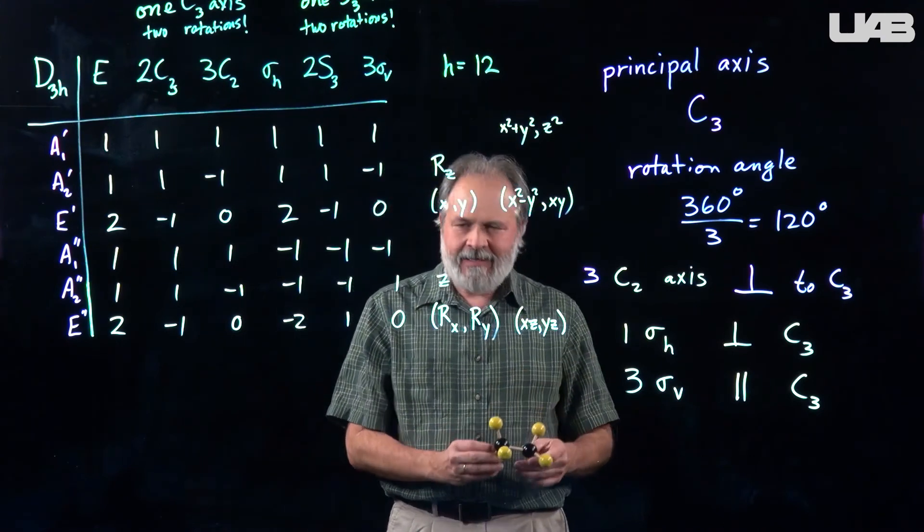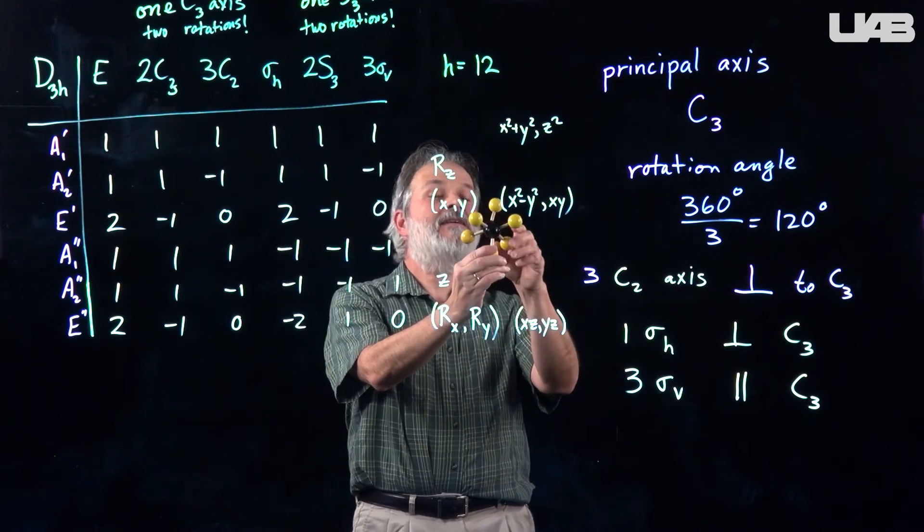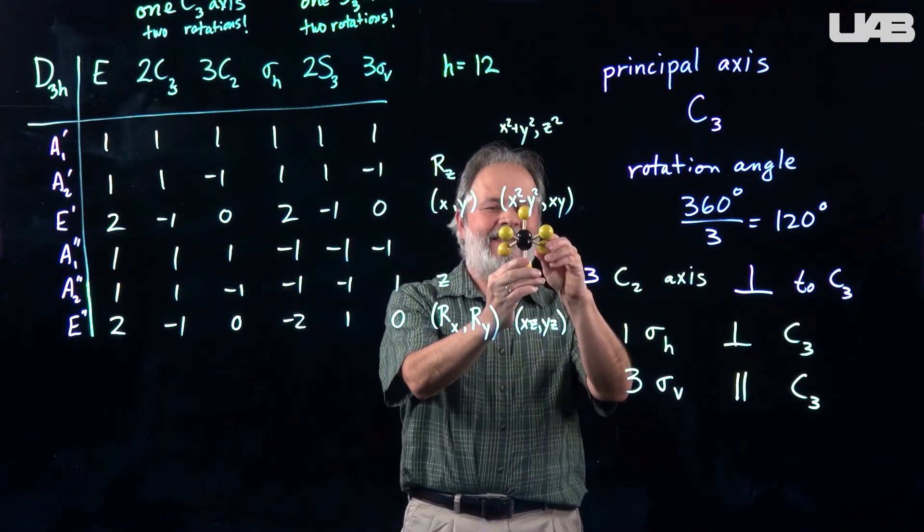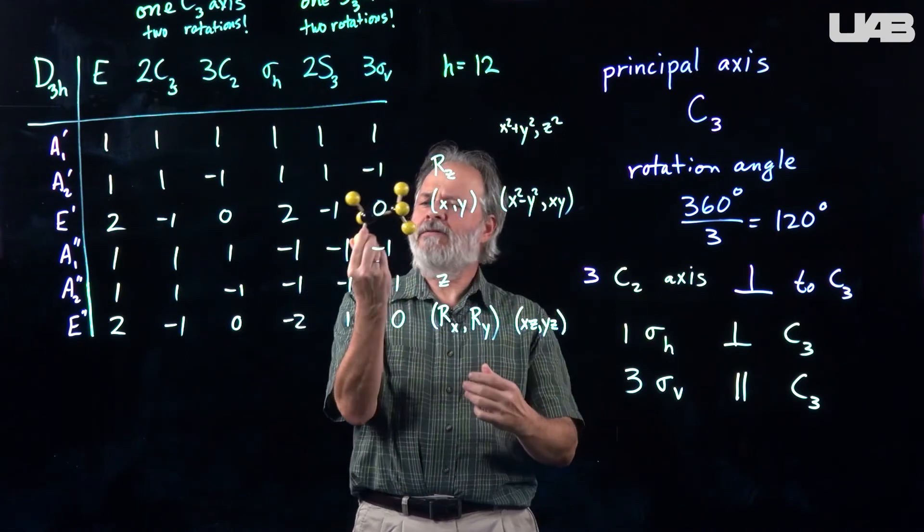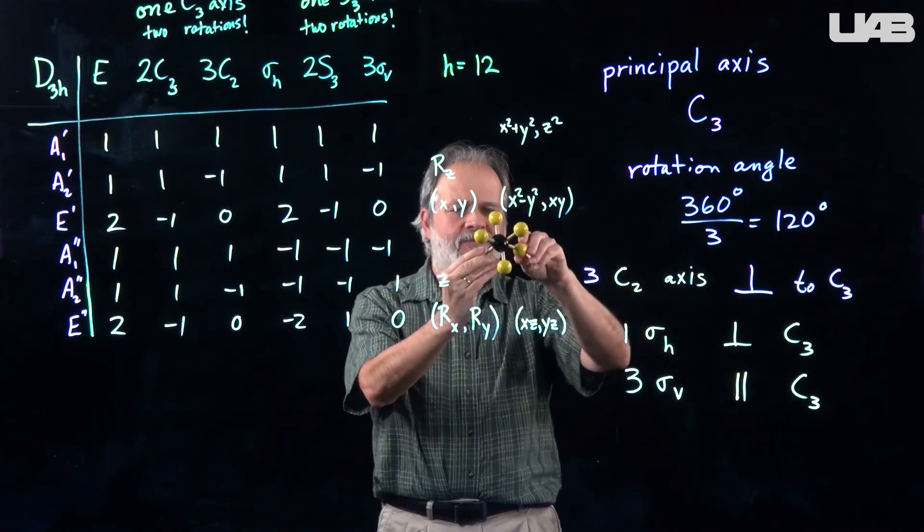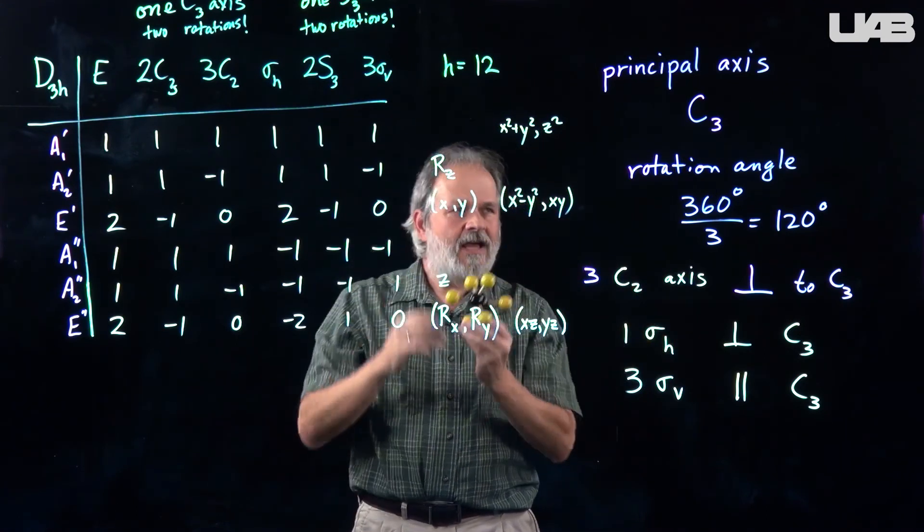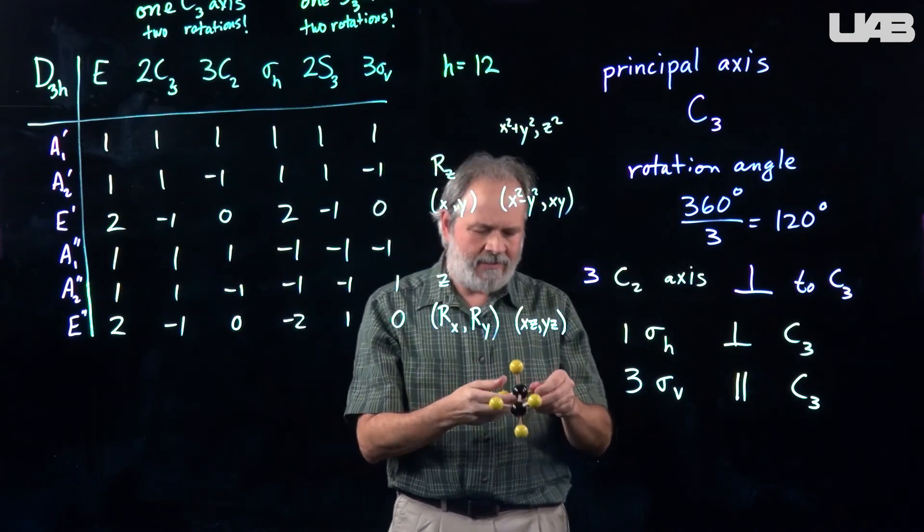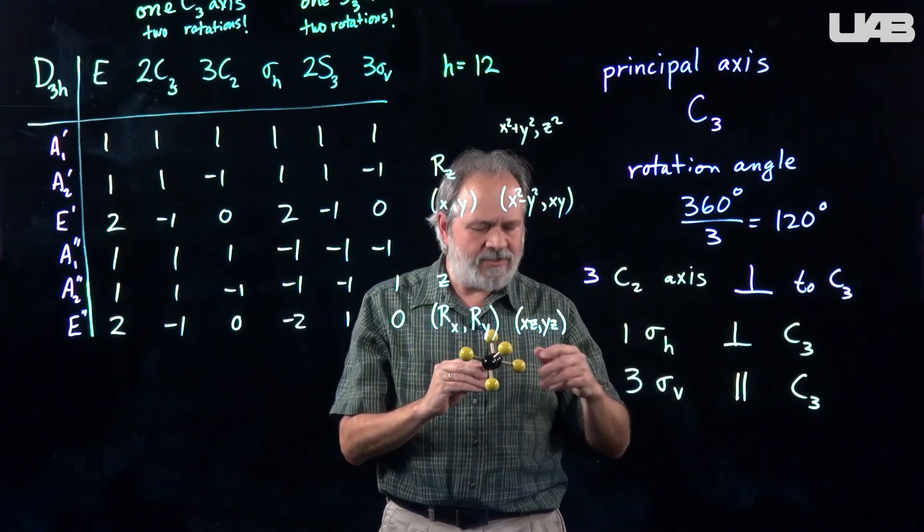So, the last topic I want to talk about is what happens when ethane becomes not eclipsed, but staggered. And so, we go through the flow chart again. It's not linear still. It still has a principal axis, a C3, so we can rotate it 120 degrees a couple of times. And it still has three perpendicular C2 axes.